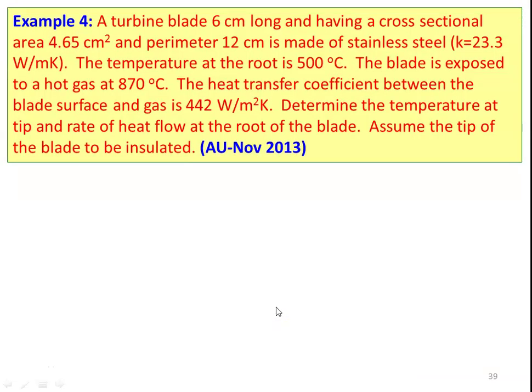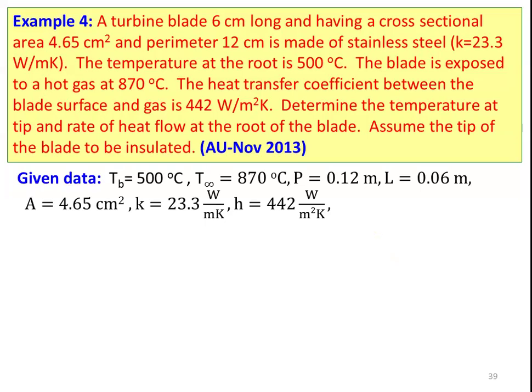Example number 4: A turbine blade 6 centimeter long, with cross-sectional area of 4.65 centimeter square and perimeter 12 centimeter, is made of stainless steel with thermal conductivity 23.3 watts per meter Kelvin. The temperature at the root is 500 degree Celsius. The blade is exposed to hot gases at 870 degree Celsius with heat transfer coefficient 442 watts per meter square Kelvin. Determine the temperature at the tip and the rate of heat flow at the root, assuming the tip is insulated. Given data: base temperature 500°C, fluid temperature 870°C, perimeter 0.12 m, length 0.06 m, area 4.65 × 10⁻⁴ m², thermal conductivity 23.3 W/mK.